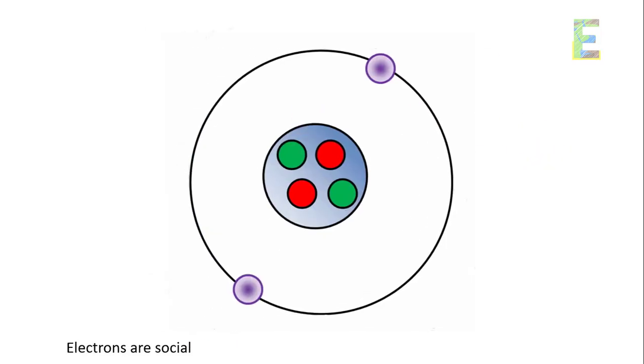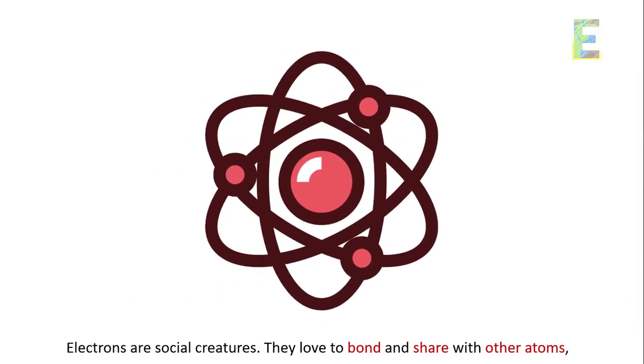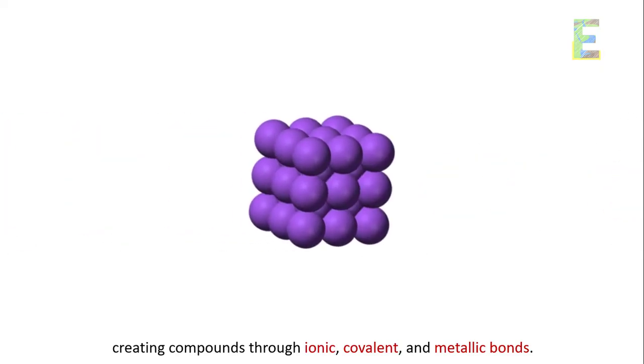Chemical bonding. Electrons are social creatures. They love to bond and share with other atoms, creating compounds through ionic, covalent, and metallic bonds.